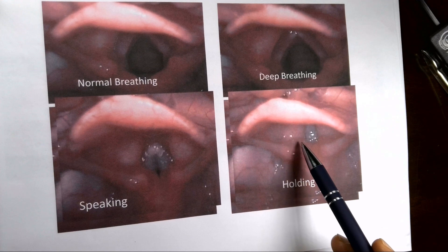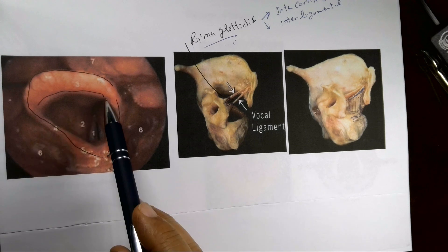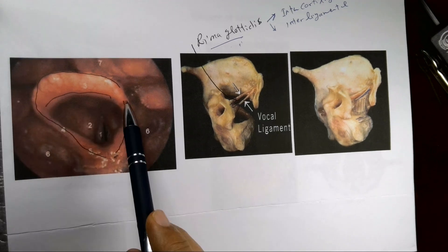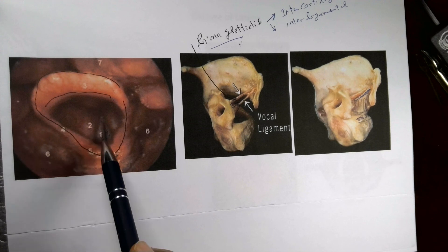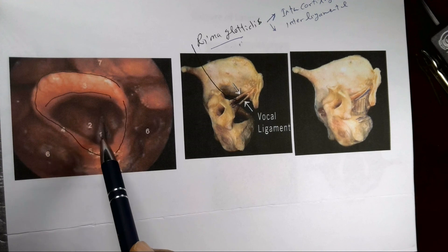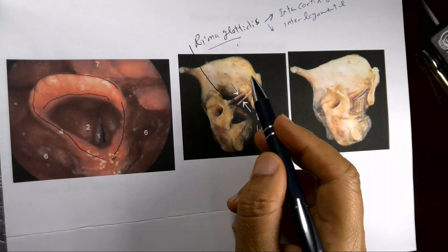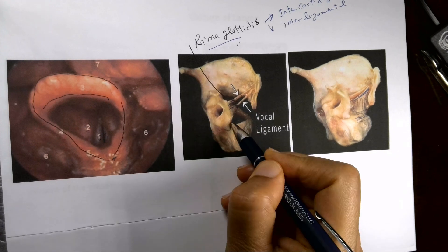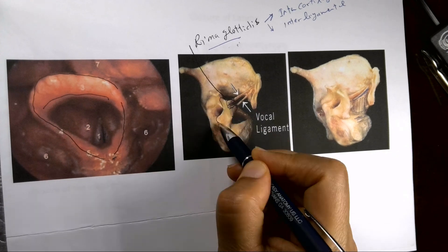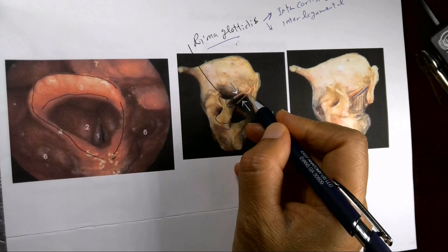In another view: number one is the vocal cord, number two is the vestibular fold. The two vocal cords are very close to each other, indicating this is during speaking. You can also see the arytenoid and its vocal process, the thyroid cartilage, and the vocal cord on each side.